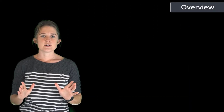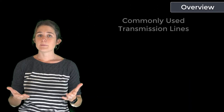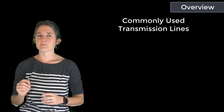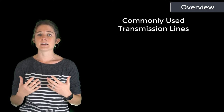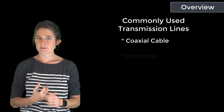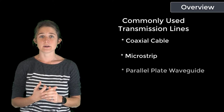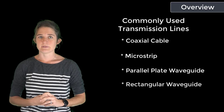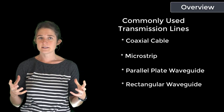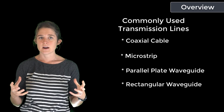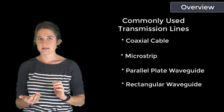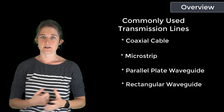This course provides an introduction to several basic and commonly used transmission lines. We will go over the basic characteristics and design equations for coaxial cable, microstrip transmission line, parallel plate waveguides, and rectangular waveguides. In each case, we will look at the basic geometric structure of the structure and then go through the specifics of supported modes, characteristic impedances, and guided wave phase velocity.